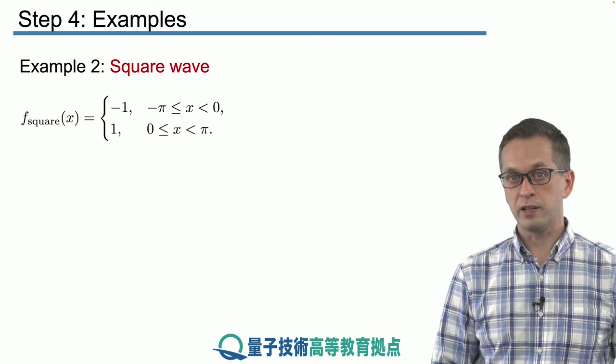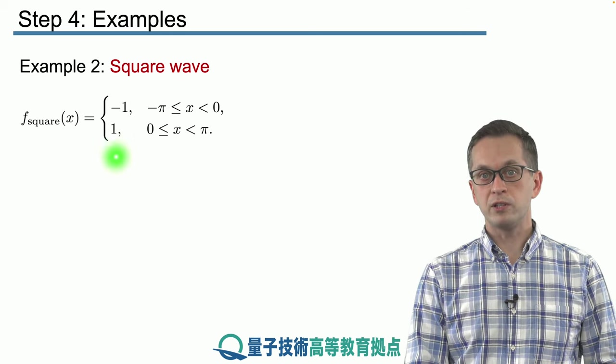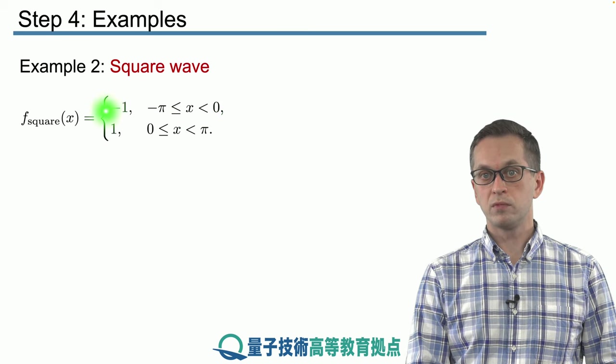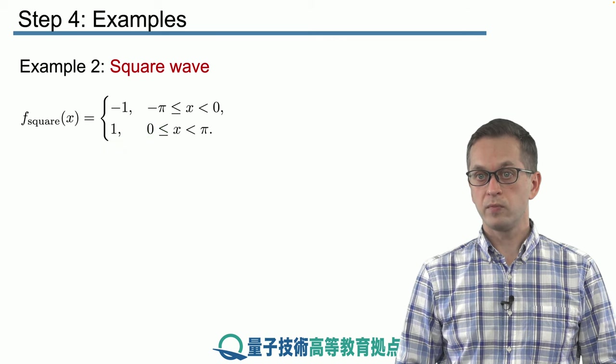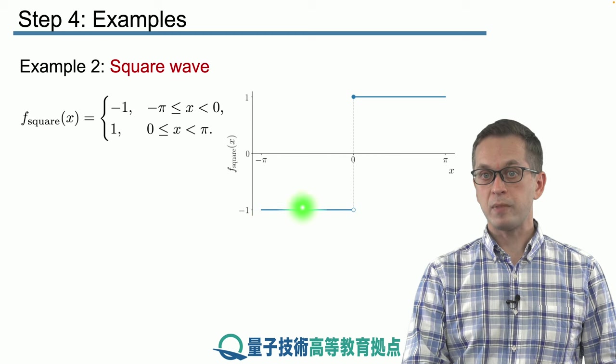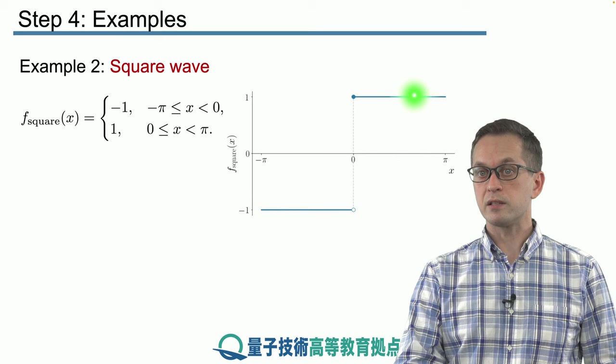So now let's look at a different example. Let's look at a square wave. And that has the following definition. On this interval from minus π to 0, it's equal to minus 1. While on this interval from 0 to π, it's equal to 1. So it really looks like a step if you graph it. Here it's flat, it's minus 1, and once x reaches 0, it goes up and it stays at 1.